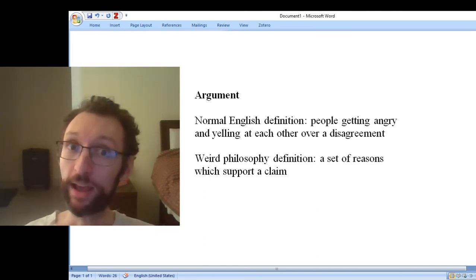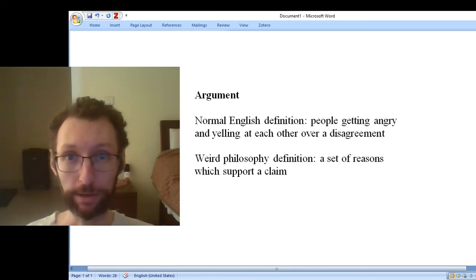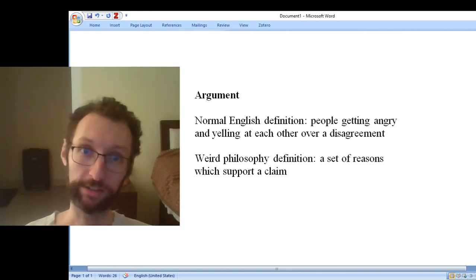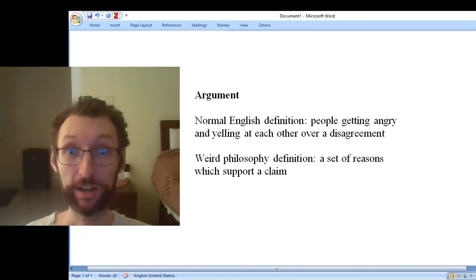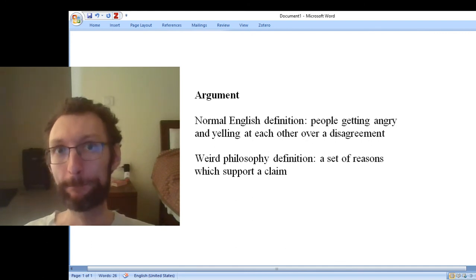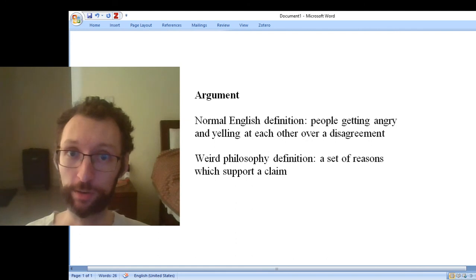Now you can have an opponent. You can have a counter argument that goes against an argument. Maybe a counter argument to my claim about my shirt would be something like, I have a history of uploading manipulated videos where I change the colors. That's a reason for thinking my shirt is not white. It's not like there's no dispute possible in arguments. But the central idea of an argument is just giving reasons which support a claim.